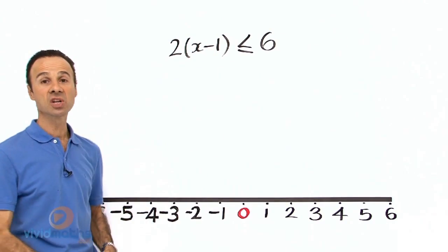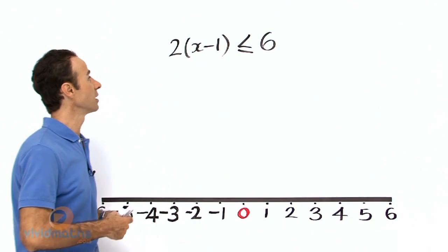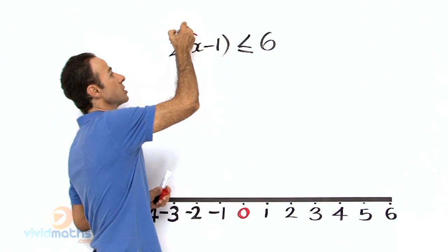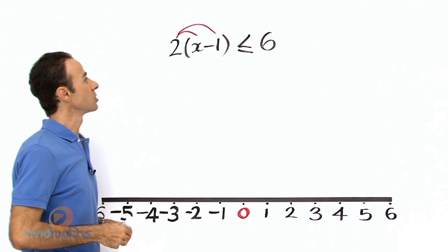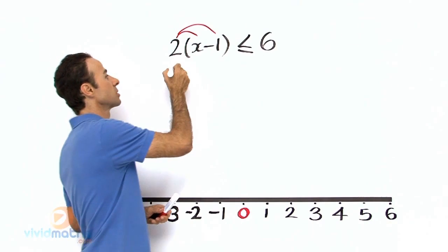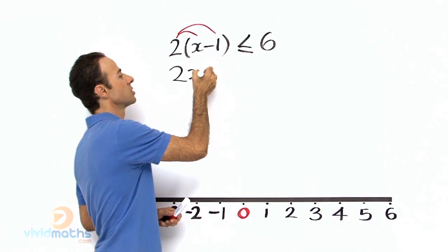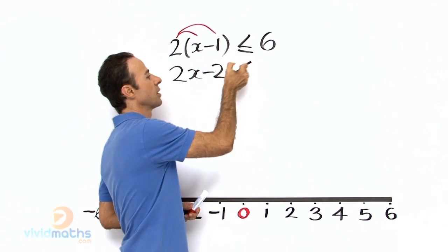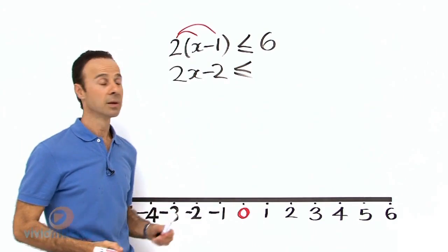Let us expand this just like we normally do when expanding brackets. So 2 times x is 2x minus 2, ones are 2. Bring down the less than or equal to sign, bring down the 6.